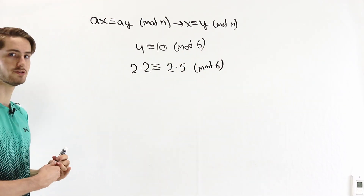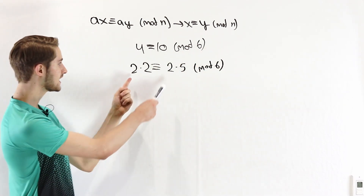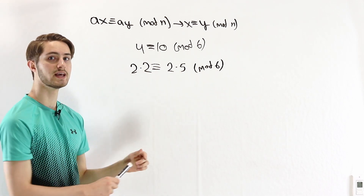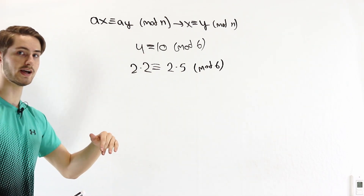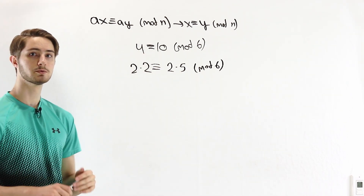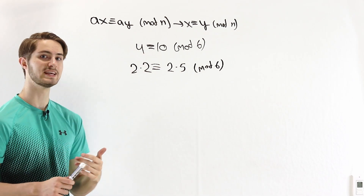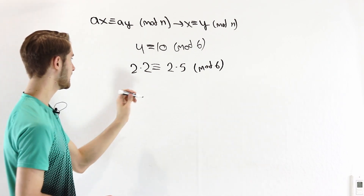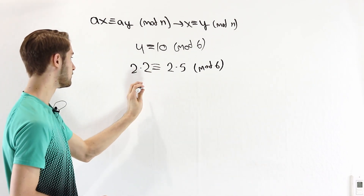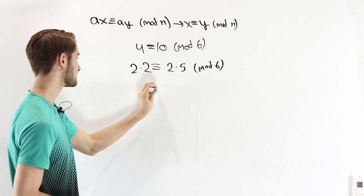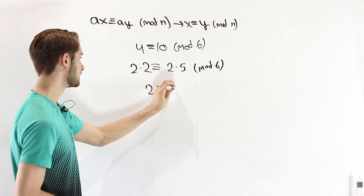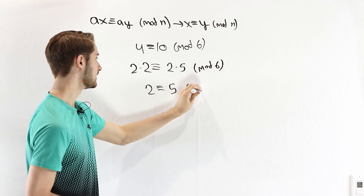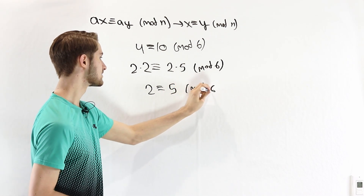So the question is, if we have this factor of 2 on both sides, can we cancel that out? Let's see what we would get if we did. We would get 2 ≡ 5 mod 6.